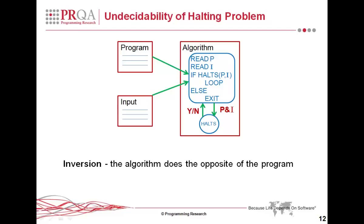We have the program, the input, and the halt function that we've seen in the previous slide, and we start trying to construct a paradox. The first thing is we add an inversion — a snippet of code in between the program and the input and the halt function, which does the inversion. So it reads the program, reads the input, and passes them to the halt function. The halt function returns information on whether the program halts or not.